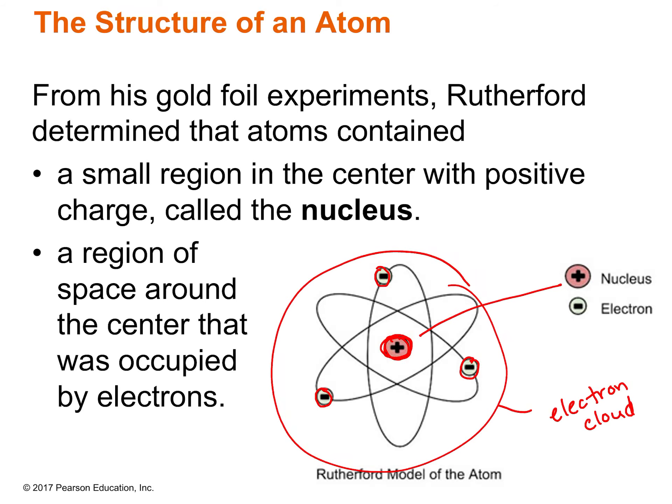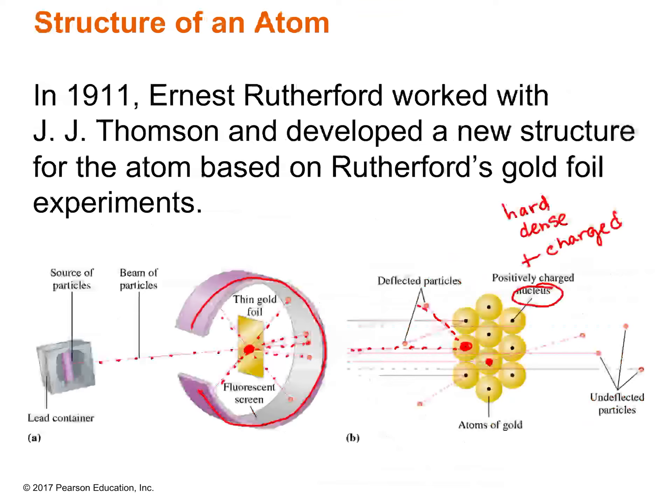The reason I like Rutherford so much is that when he was doing this experiment — he thought all of the alpha particles were going to go straight through — when some of them bounced off, he was so shocked. He said it was like a howitzer shell bouncing off of a tissue. Essentially, if you took a gun and pointed it at tissue paper and shot it, and then the bullet bounced off — that would be crazy. That's how shocking this experiment was.